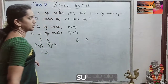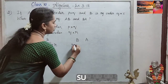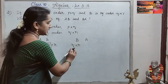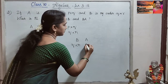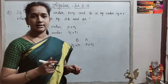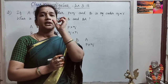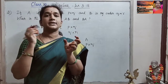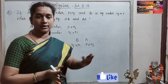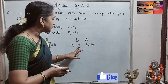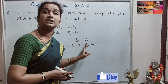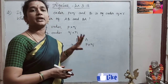Then, the order of BA we are asked to find. The order of B is Q cross R and the order of A is P cross Q. As I mentioned earlier, for finding the product of any two matrices, the column of the first matrix and the row of the second matrix should be the same. If it is the same only, we can find the product; otherwise we cannot find the product. Here, the column of the first matrix and row of the second matrix is not the same, so we cannot find the product of BA.